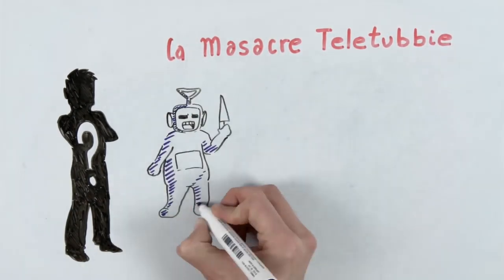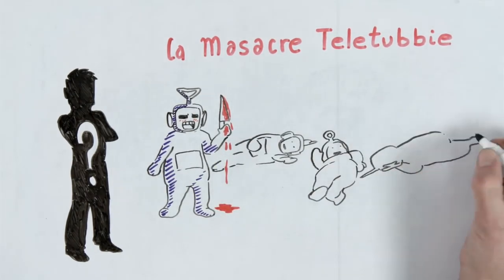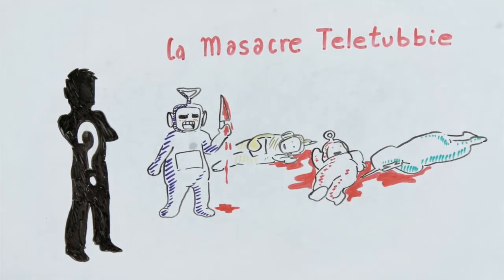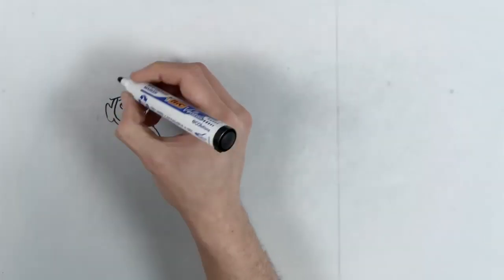The game's events begin with Tinky Winky eating infected Tubby Custard. Due to this, he starts to become a monster and kills the other three afterwards, creating the Tubby Massacre.